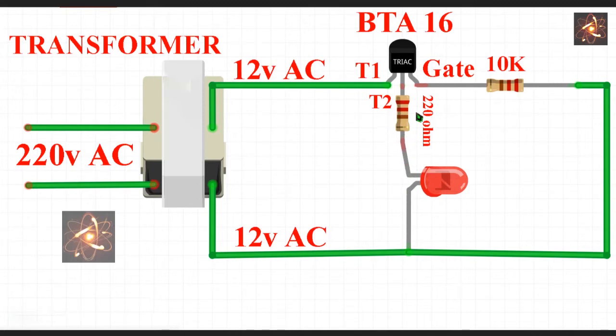To limit the current I am using 220 ohm resistor. It will protect this LED. On the other hand, 10K resistor will protect and limit the current for gate.